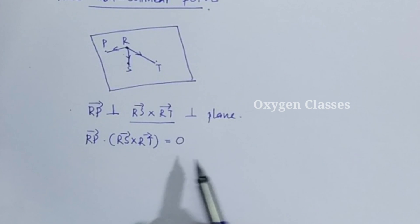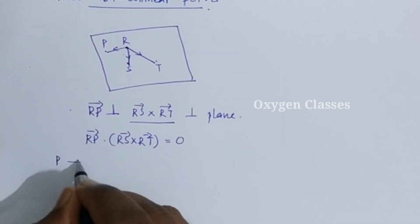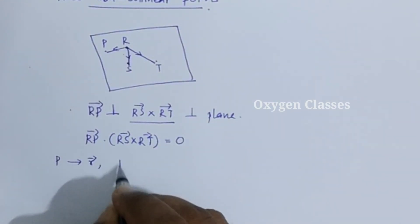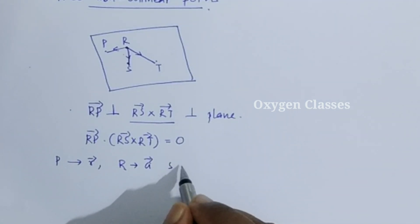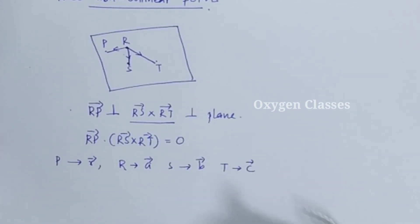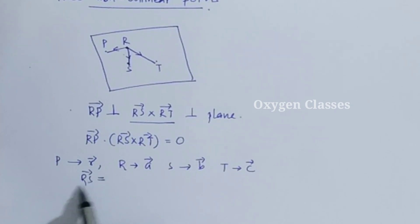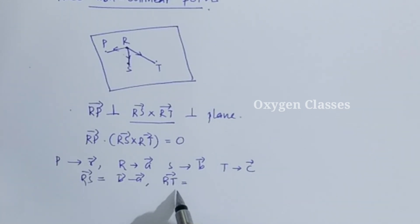Let the position vector of P be R, of R be vector A, of S be vector B, and of T be vector C. Then RS = position vector of S minus position vector of R = B minus A. And RT = position vector of T minus position vector of R = C minus A.